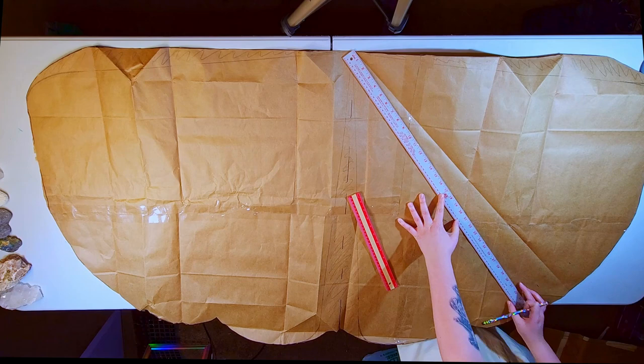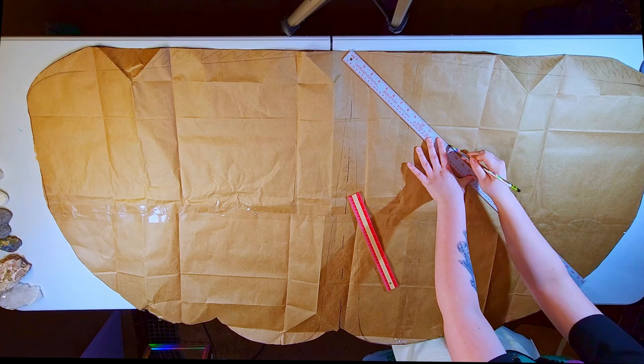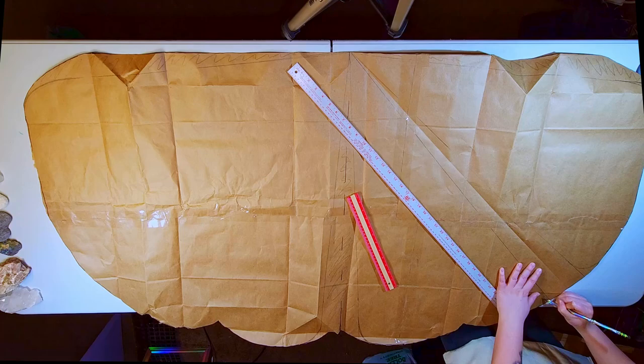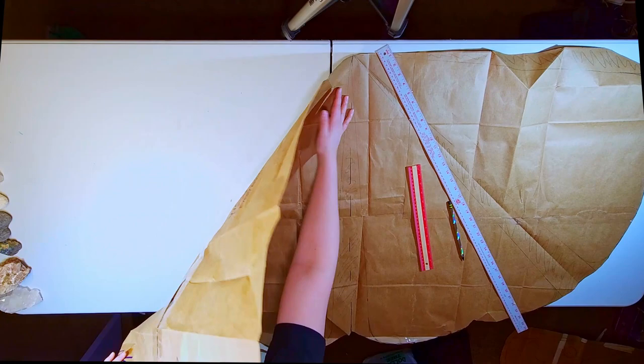And then to make it look a little bit softer and more intentional, I'm sloping the corners so that it's not just a harsh cutoff. It'll kind of blend like wings should.